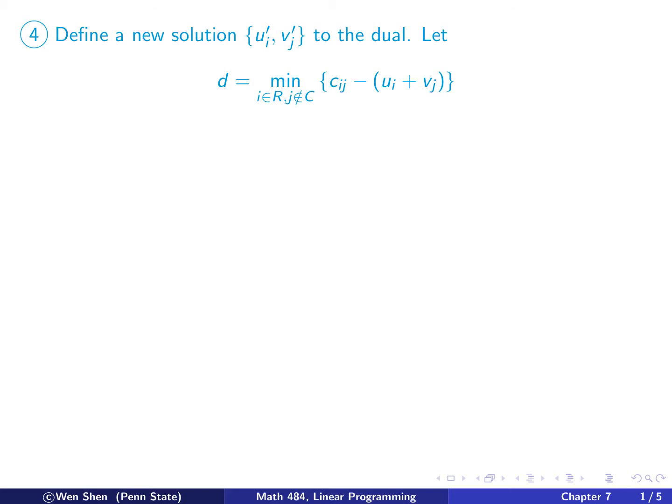And then now we're going to redefine a solution to the dual problem based on that information. So here's step 4. A new solution for u_i and v_j, now we put a prime on the top to say that's a different one to the dual problem. First, let's define the quantity d. d is defined to be the minimum of this quantity, that is c_ij minus (u_i plus v_j).